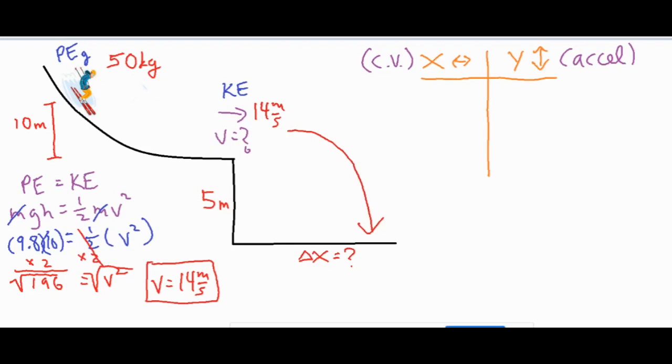We place all variables in the X or Y column depending on their direction. The 14 meters per second is directed sideways, so we put that in the X column. The acceleration is directed vertically, negative 9.8 meters per second squared, so we put that in the Y column.